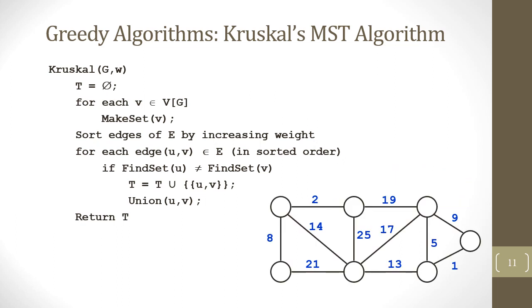Let's apply Kruskal's algorithm to the following graph. First, we make each vertex an individual set, represented by different colors, and sort edges by increasing weight. We pick the edge with minimum weight, which is 1. Both endpoints are of different color, meaning they are in different sets, so we safely add this edge to the MST and apply union so that the endpoints are now in the same set.